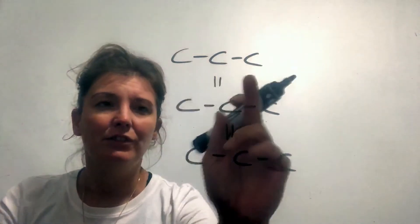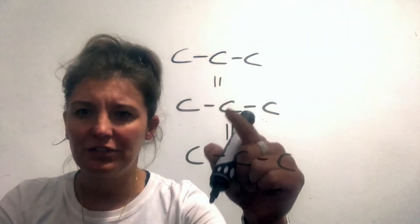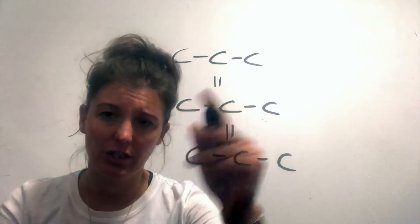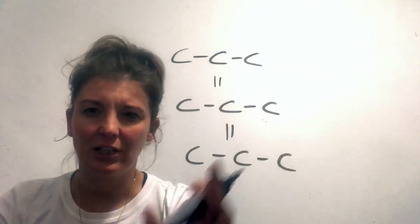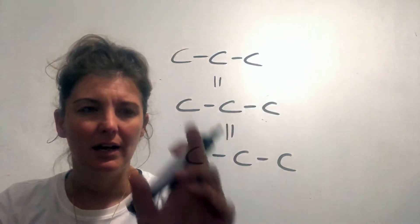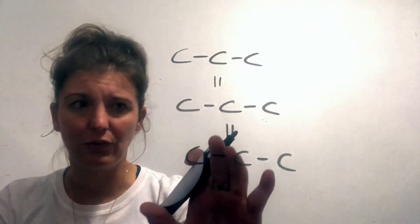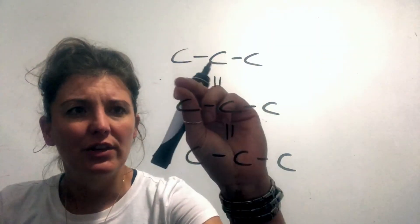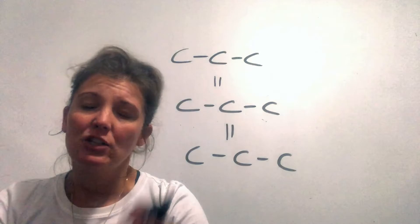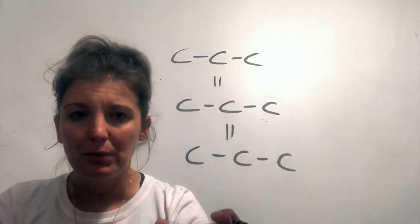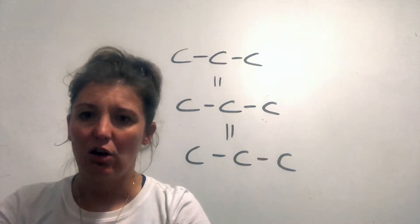In the case of Alkanes, the only forces between the molecules are weak forces between the carbons and hydrogens. There are no stronger forces involved — only electrostatic attraction, which is the most basic and simplest form of attraction. So these intermolecular forces are very weak, and therefore the melting point and boiling point of Alkanes are low.